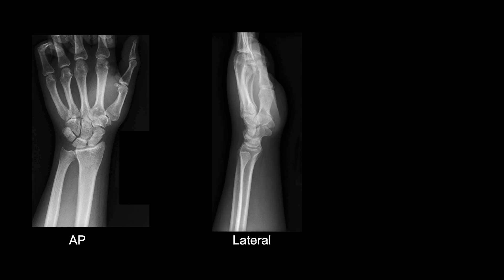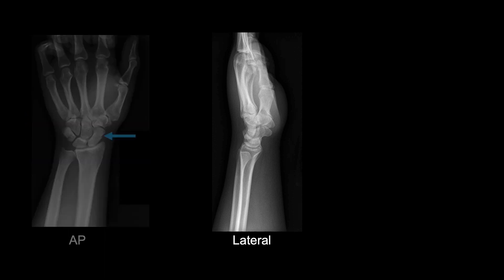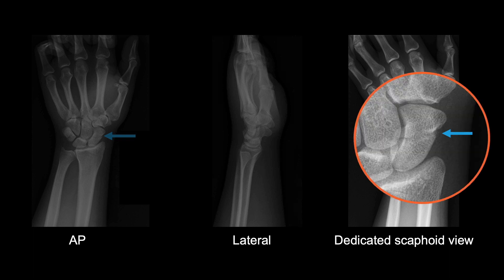Routine AP and lateral radiographs of the hand may demonstrate the fracture. In this example, the fracture is subtle on the AP view and not visible on the lateral view. A dedicated scaphoid view with the hand ulnar deviated is better — you can see the fracture more clearly on that dedicated view.